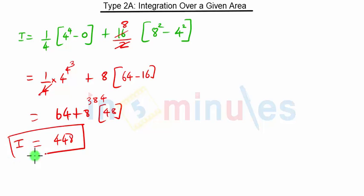So 448 is our final answer for this question. This is how we solve the Type 2a problems on multiple integration. More such problems will be covered in our next video, so stay tuned for future lectures.